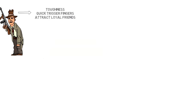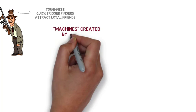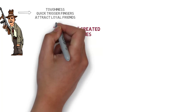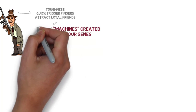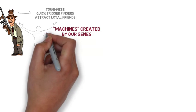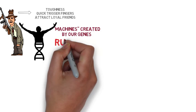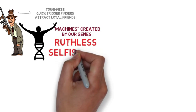Similarly, Dawkins' central argument is that we are machines created by our genes, and therefore we can make certain assumptions about the quality of our genes. Our genes have survived in a highly competitive world, and therefore a successful gene would strongly possess the attributes of ruthless selfishness.